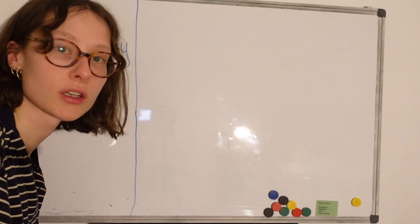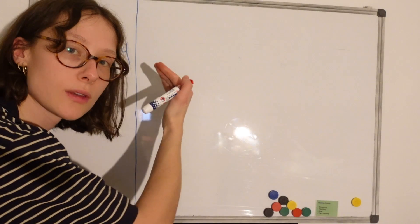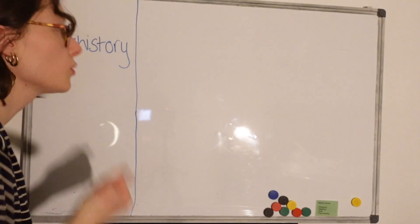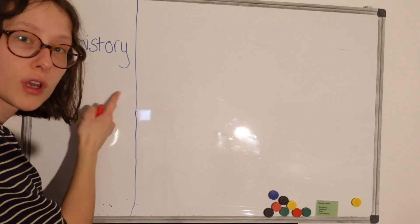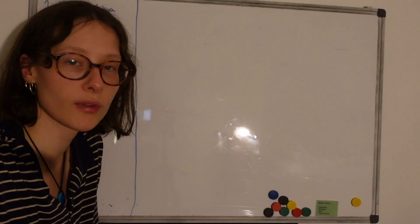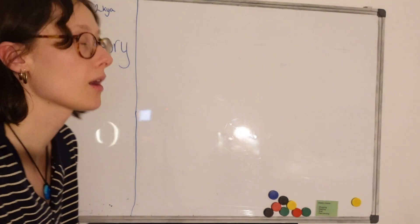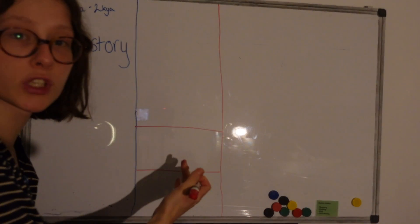Now in typical fashion on the whiteboard we are going to be doing some magnification of timescales. So we've got our main chunk here, prehistory. Now to fully explain this we're gonna have our three disproportionate divisions.